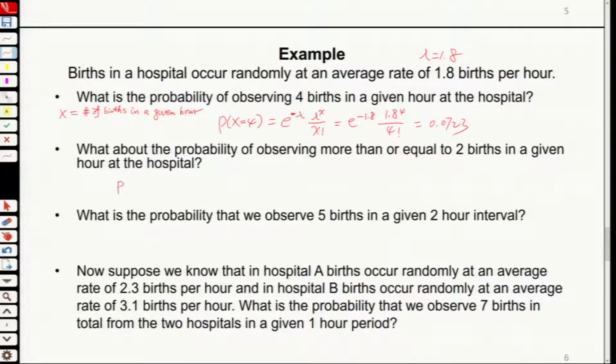For this one, it's X greater than or equals 2. This will equal probability X equals 2 plus probability X equals 3, and you have so many more, and it's very difficult to calculate. What do we do? Yes, the complementary. 1 minus probability X less than 2. This will equal 1 minus probability X equals 0 minus probability X equals 1. In this way you'll be able to get the probability.